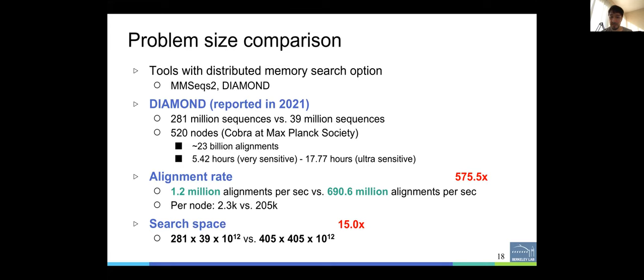This is an increase in alignments per second in two orders of magnitude in this metric. And as for the search space, the size of the search, the actual size of the search, we increased that by an order of magnitude, 15x.